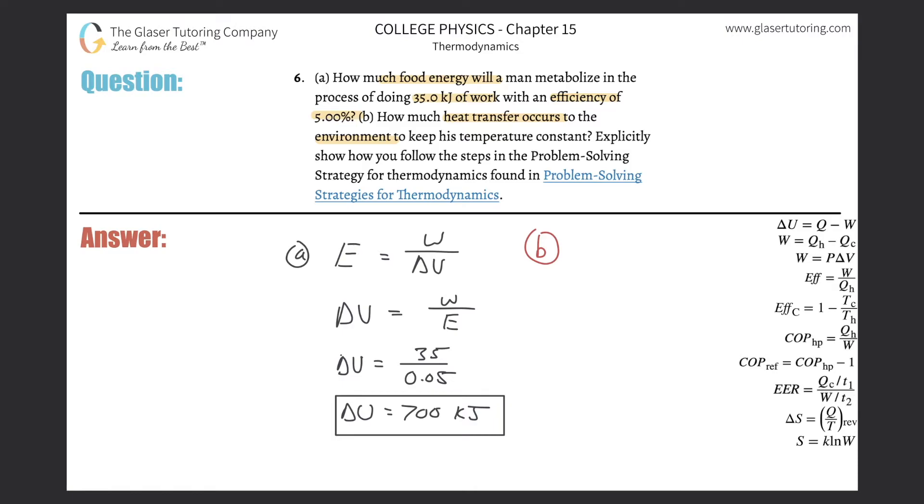Letter B says: How much heat transfer occurs to the environment to keep his temperature constant? Explicitly show how you follow the steps. Basically, we need to find heat transfer. We need to relate that to the work, because they gave us the work and now we know the total internal change. I'm going to be using the formula over here on the right-hand side, however with one little change. The change in internal energy of a system is going to be equal to the change in heat energy of that system plus the change in the work done by the system, or on the system. Check out number two for a detailed discussion on this.